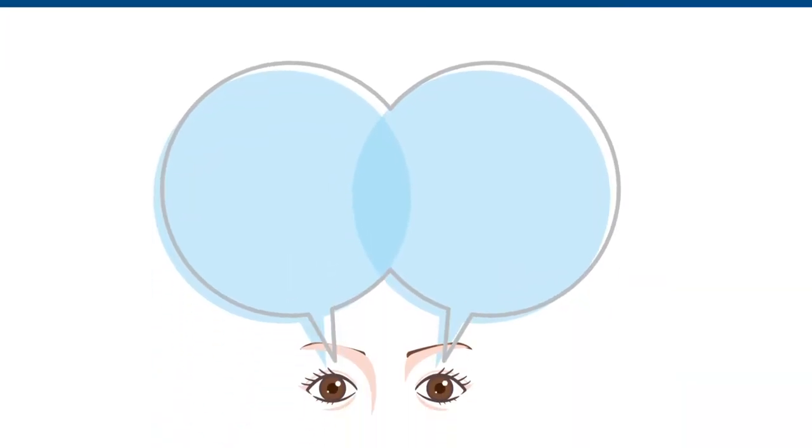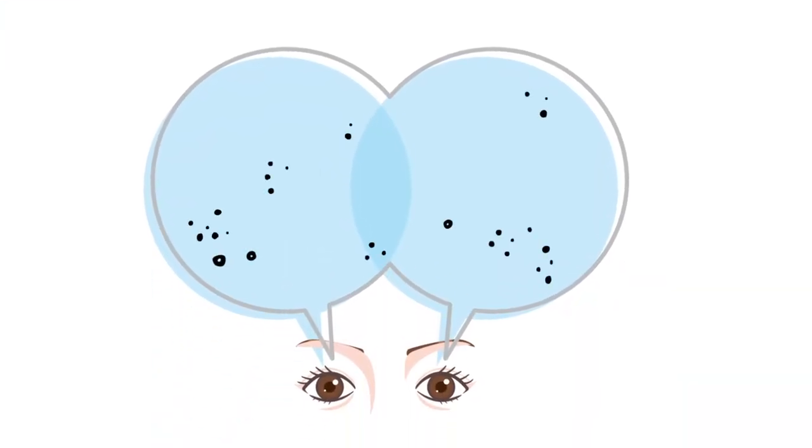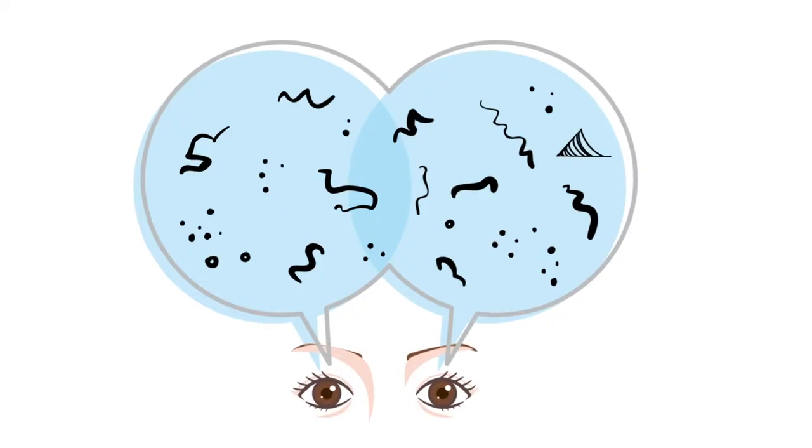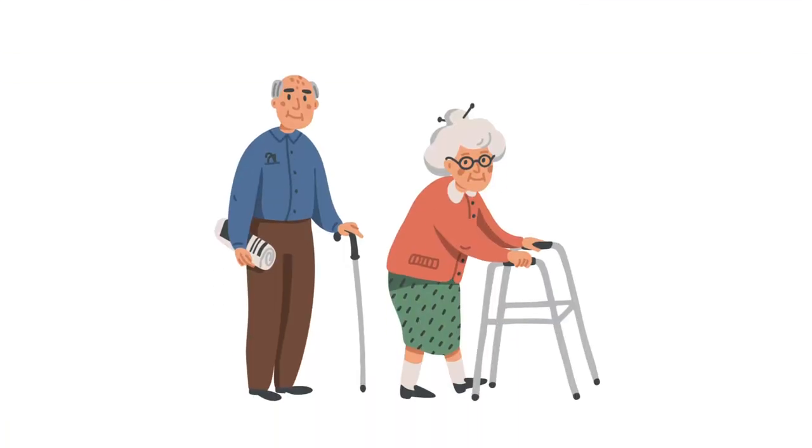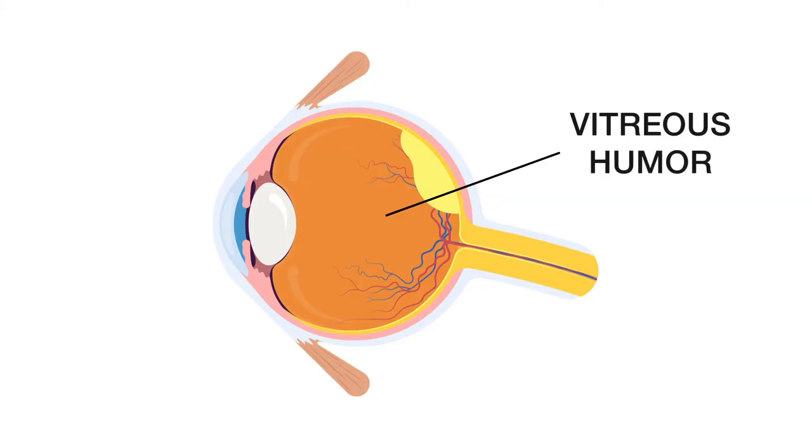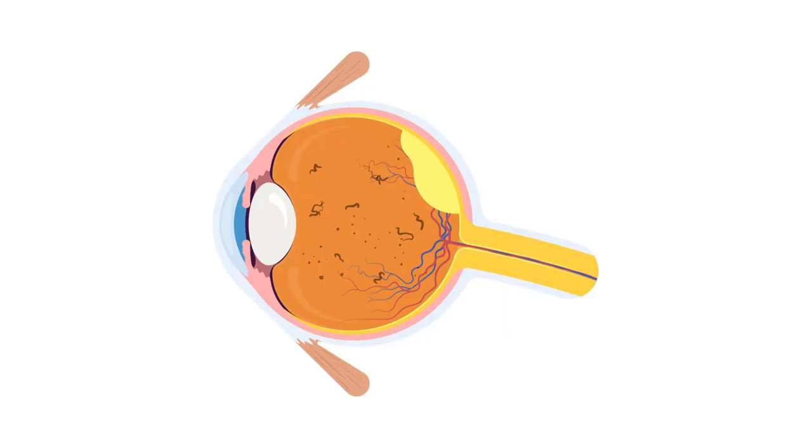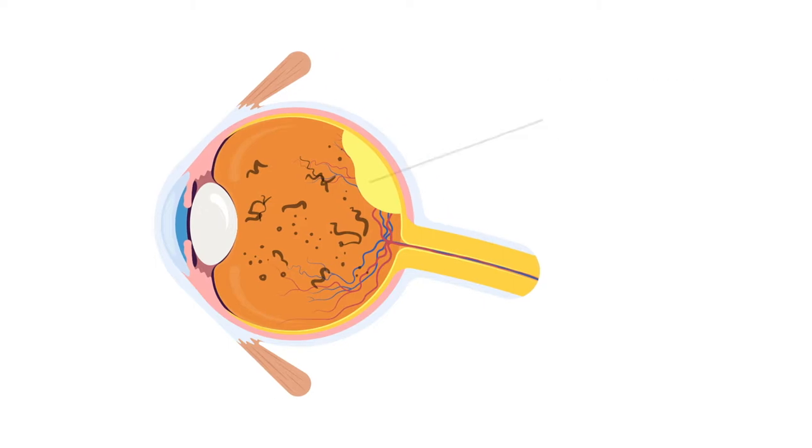Floaters. Floaters are common and appear as specks, threads, or cobweb-like shapes in your vision. They are usually harmless and occur with age, as the vitreous humor in the eyeball dissolves from a gel to a waterier substance. Undissolved particles often remain and float around the liquid center. They can take on different shapes and sizes as they cast a shadow on the retina.